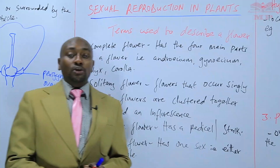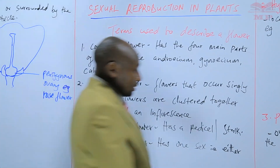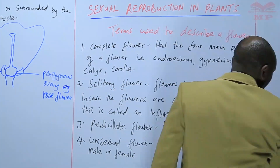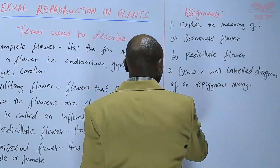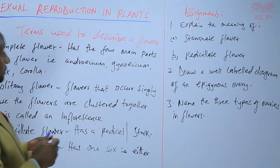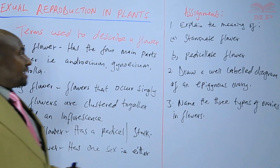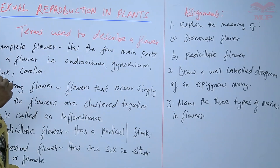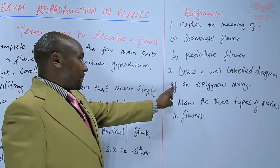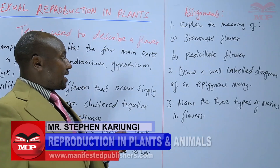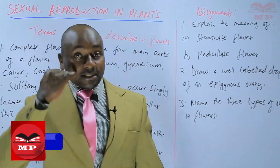So basically, we've seen some of the terminologies that we use to describe the ovaries and also some of the terms that are used to describe a flower. Today's assignment: question one, explain the meaning of A, staminate flower, and B, pedicellate flower. Number two, draw a labeled diagram of an epigynous ovary. And number three, name the three types of ovaries observed in flowers. Until next time, goodbye.